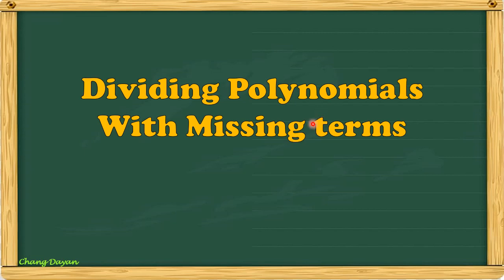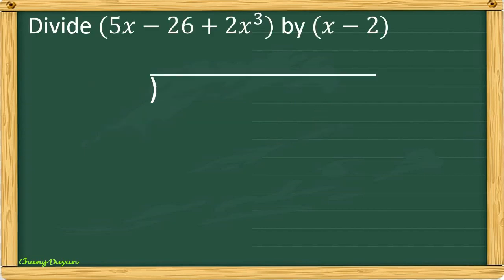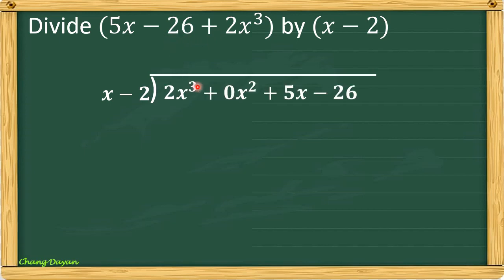Next, let us divide polynomials with missing terms. The divisor here is x minus 2, and as you can see in our given, the highest degree is 2x cubed but there is no squared term. If that's the case, you have to put 0x squared as a placeholder for the missing term. Write your terms in descending order of exponents.